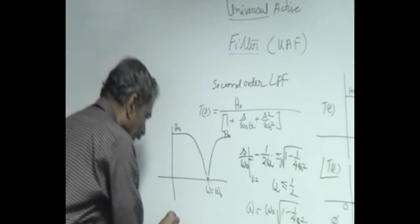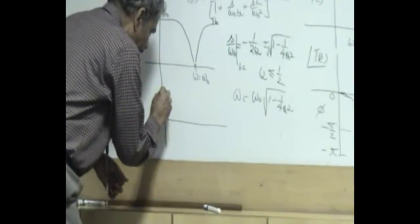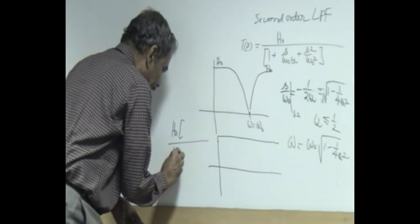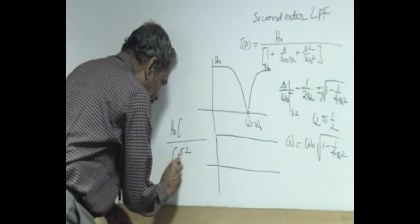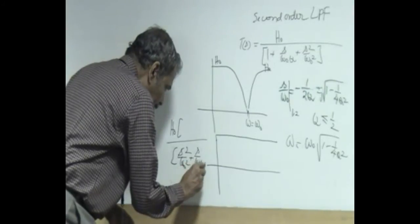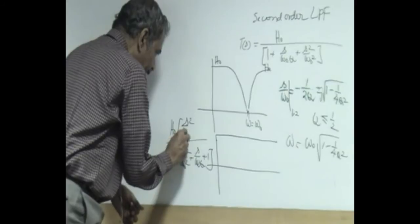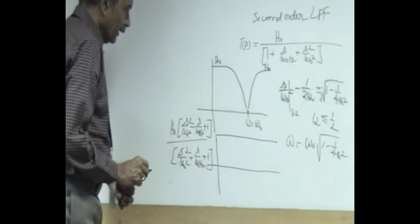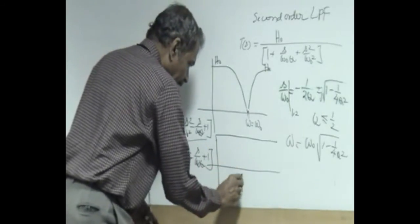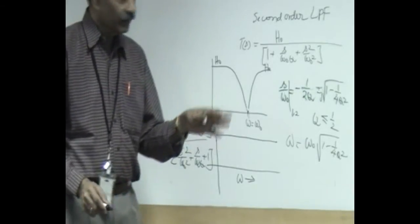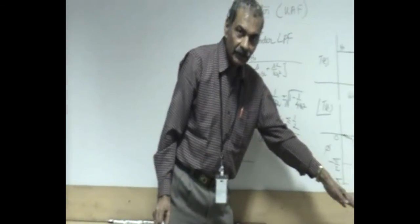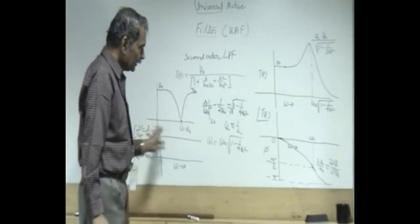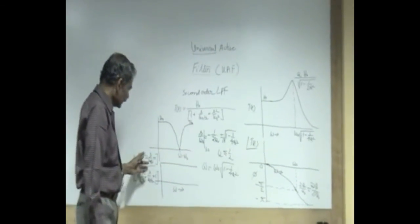You use a notch filter and an all pass filter which has the poles and zeros as mirror images. So this will be the pole, pole remains the same as before and in the zero you have high pass then band pass in negative sign and low pass. So this gives you a constant magnitude function. However, the phase varies from 0 to 360 degrees. 0 to pi is caused by one pair of poles and further phase shift of another additional pi can occur due to the zero.